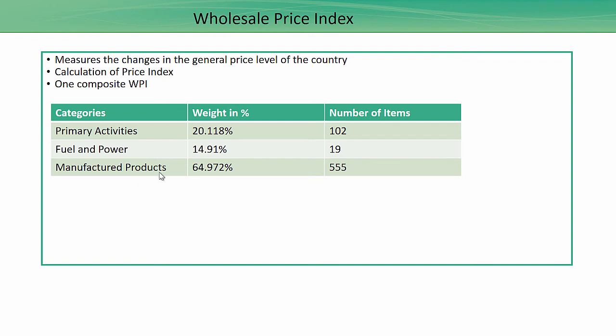Primary articles are divided into subgroups of food articles, non-food articles, and minerals. There are around 102 commodities included in this category, and the weightage given is 20.118%.